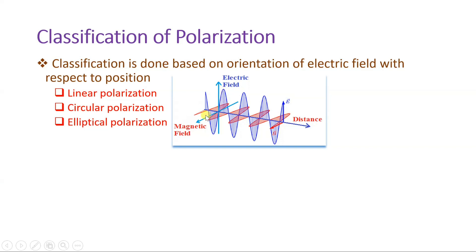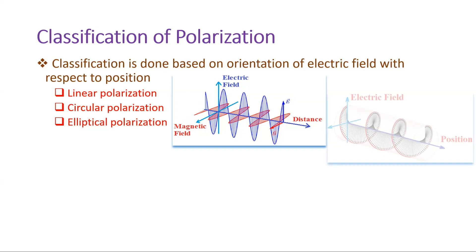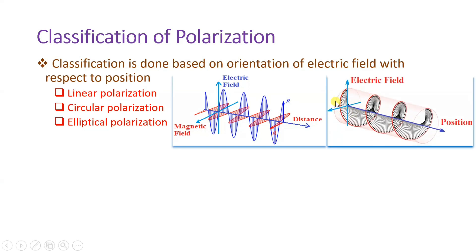If the electric field stays horizontal throughout the propagation, then one can say this is linear polarization with horizontal orientation — that is horizontal linear polarization. In the second case, I have only plotted the electric field, where you can observe the electric field orientation is revolving in a circular pattern and it forms a helical shape. In the counterclockwise direction this orientation is happening as it propagates — this is a case of circular polarization.